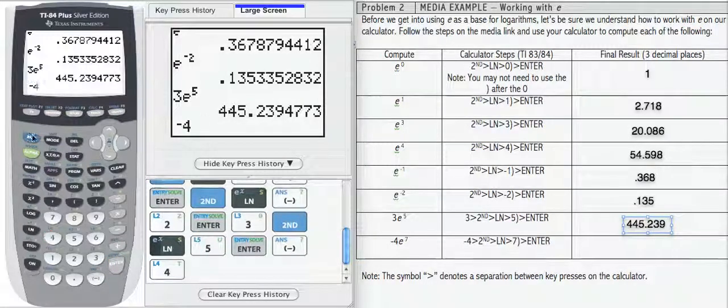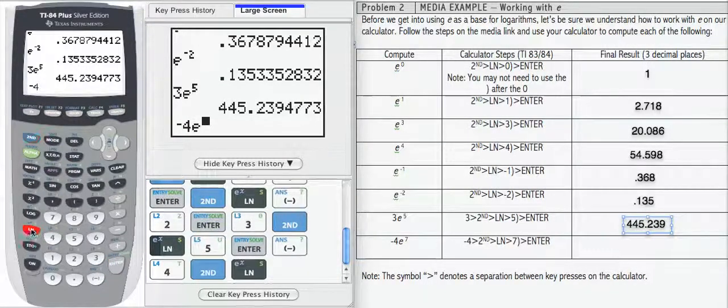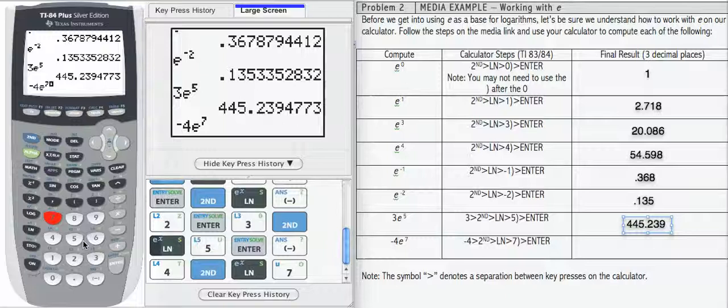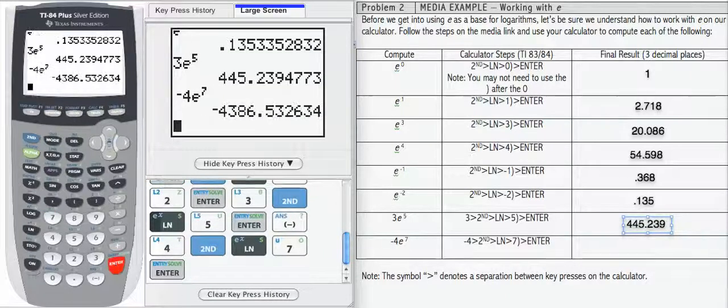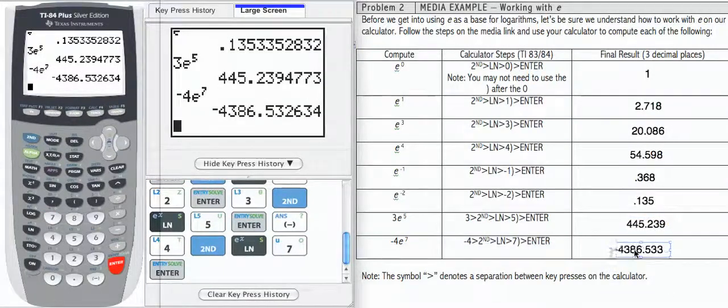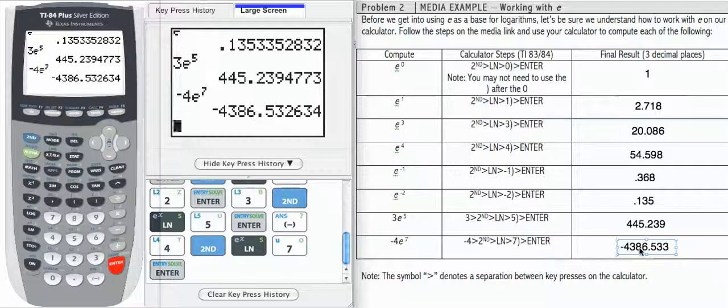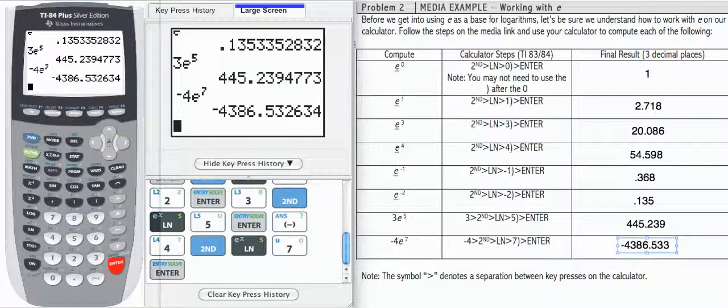And then let's look at the last one, negative 4e to the seven, enter. I get negative 4386.533, rounded to three decimals.